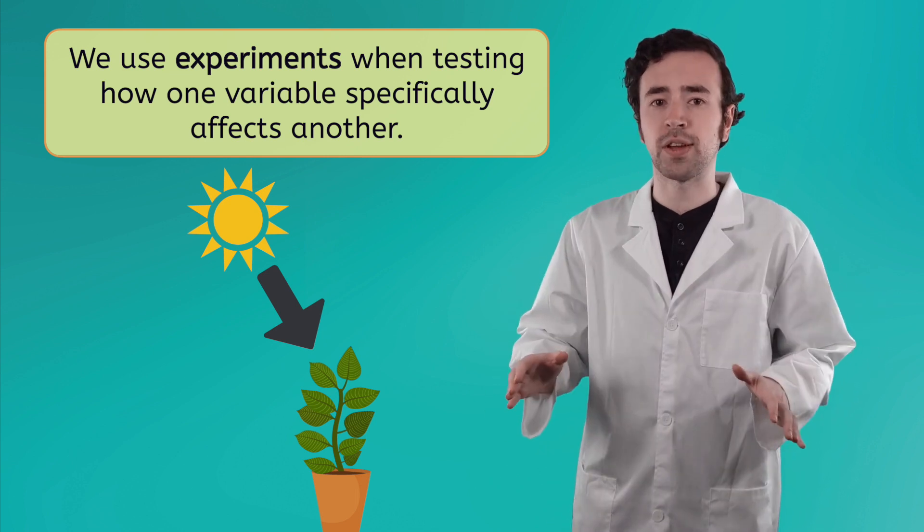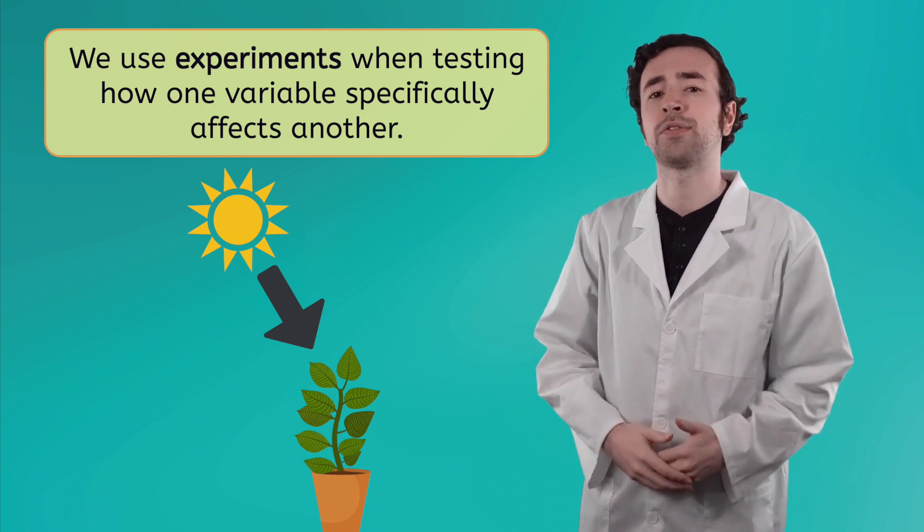Luckily for us, we don't need to perform an experiment to answer every single scientific question we might have. We can use descriptive investigations to find out more information through observation, and we can use comparative investigations to collect and compare data on different living things or conditions. We only need to use experiments if we are testing how one variable specifically affects another without interference from other factors. In our next lesson, we'll be examining how scientists effectively measure the results of their investigations. Until then, fellow biologists, I'm Justin, and remember, life is full of wonders. So keep learning, and don't ever stop wondering.